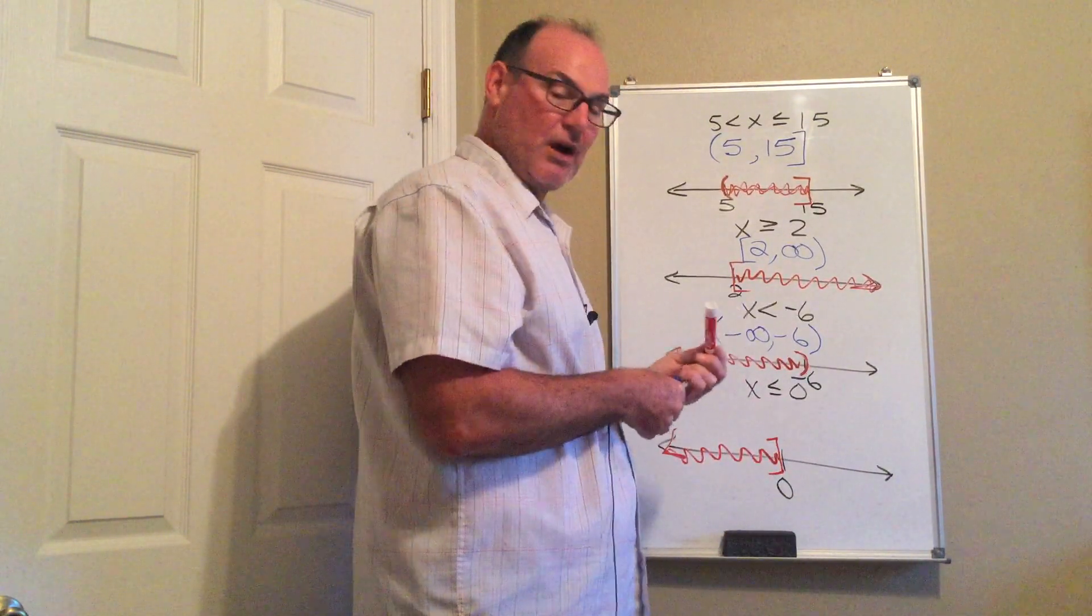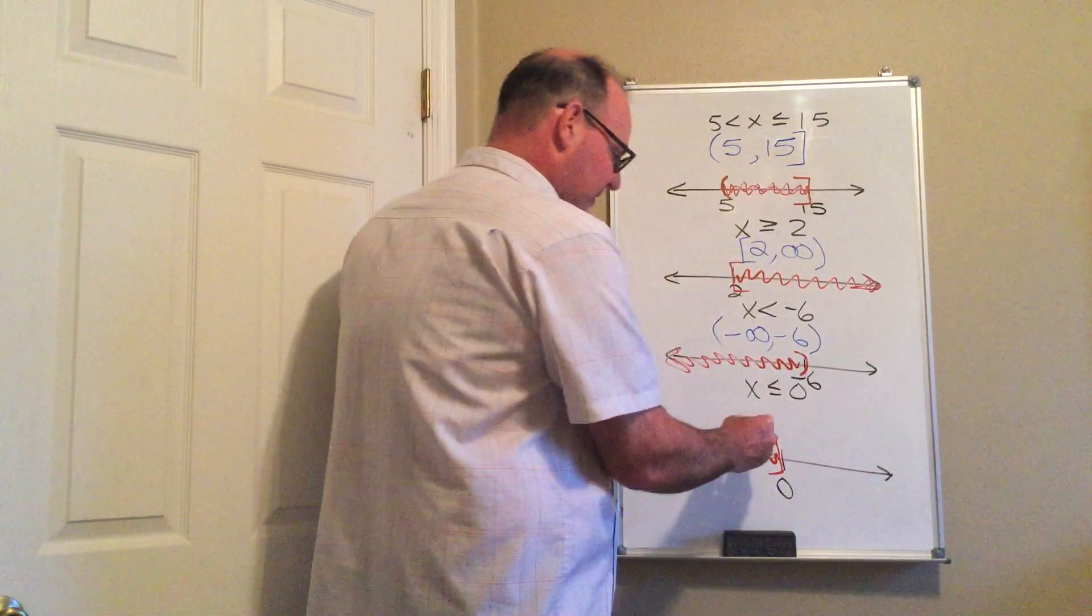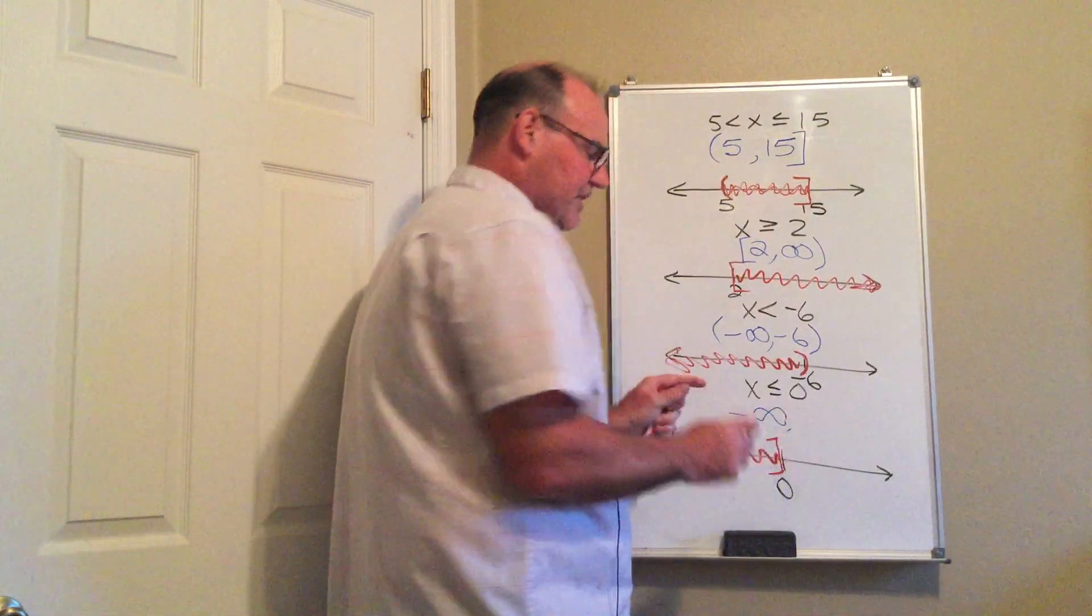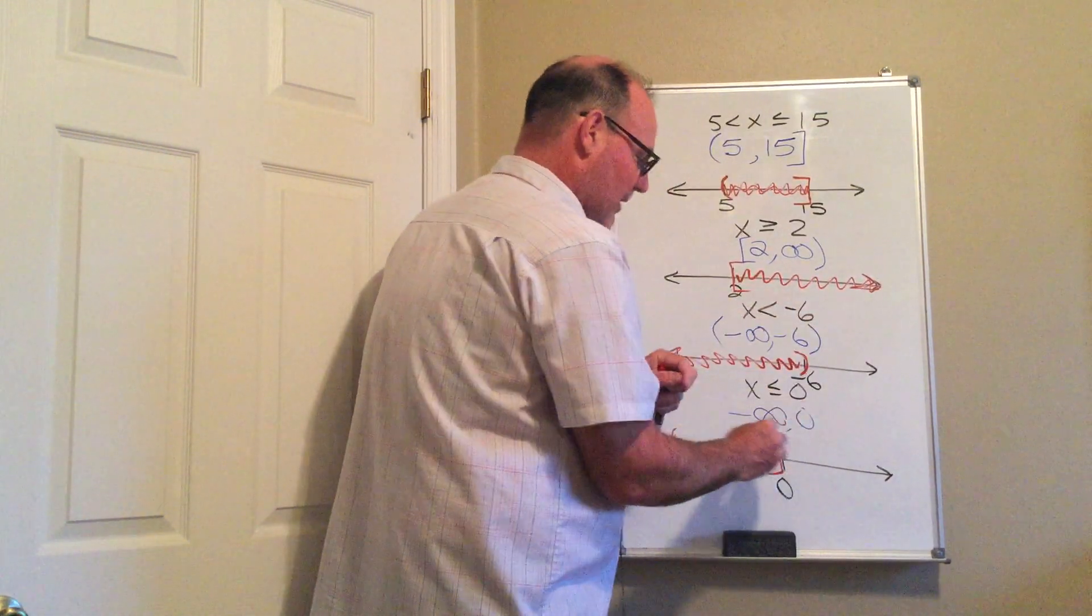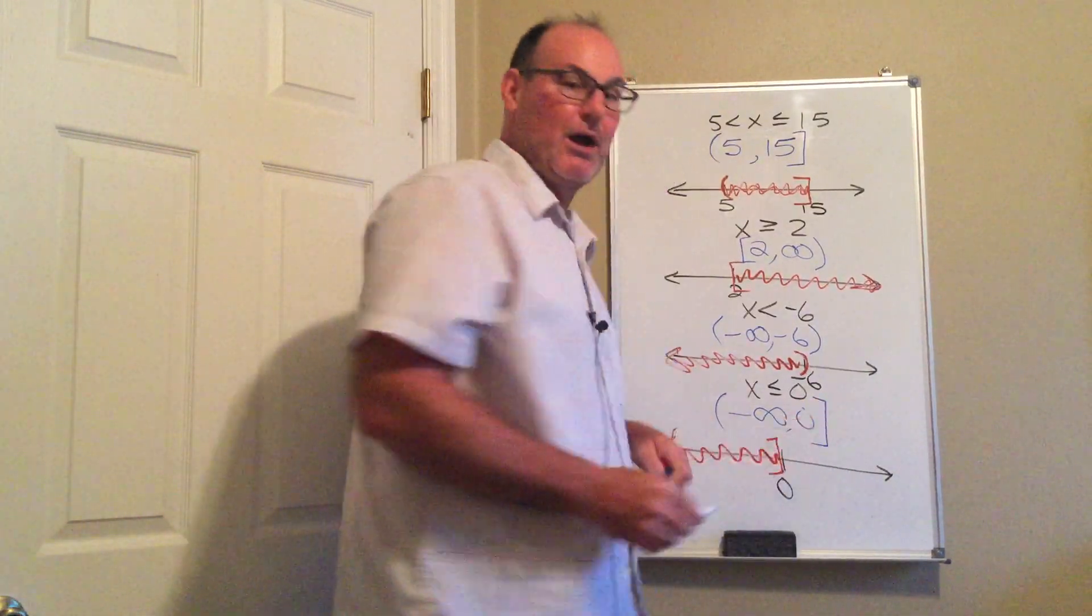And now when I construct the boundary, when I construct my interval notation, the furthest to the left this goes is negative infinity. The furthest to the right this goes is 0. Always put a parenthesis at infinity. Put a bracket at 0, and you're done.